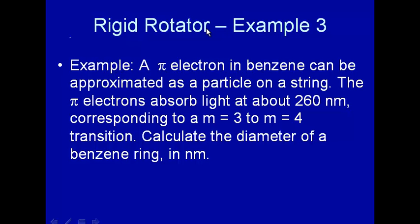Here's a final example using rigid rotator in two dimensions, particle on a string. A pi electron in benzene can be approximated as a particle on a string. Why is that?